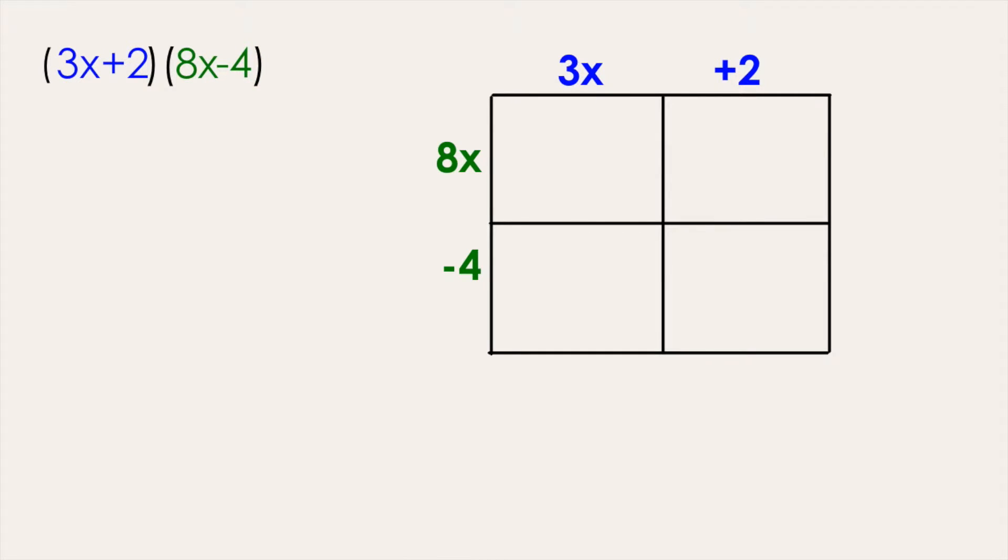In each square of the box, we're going to multiply the term that is directly above the box and directly to the left of the box. So we begin by multiplying 3x times 8x to get 24x squared. In this box, we're going to multiply 2 times 8x. Then we're going to multiply 3x times negative 4 to get negative 12x, and lastly multiply 2 times negative 4 to get negative 8.